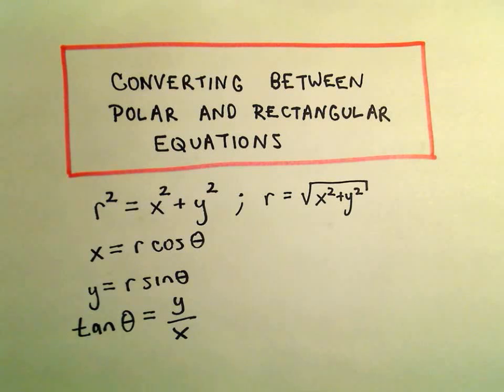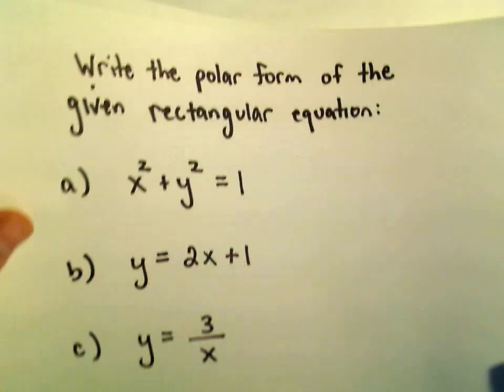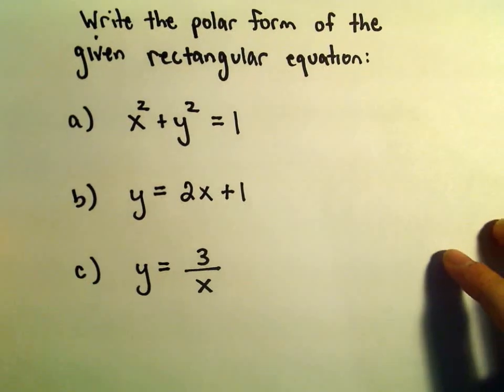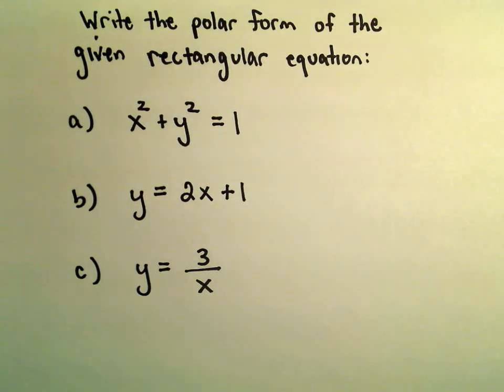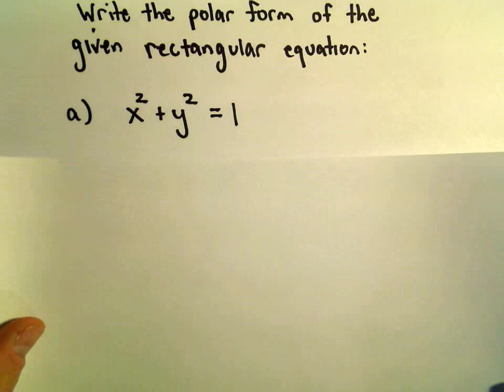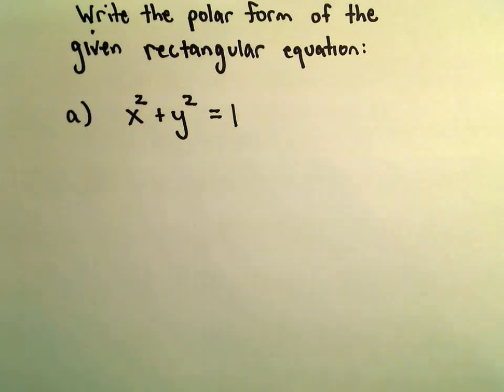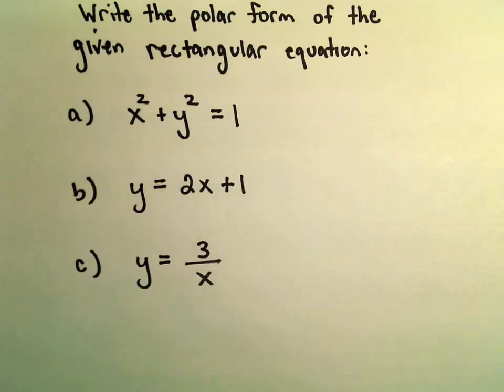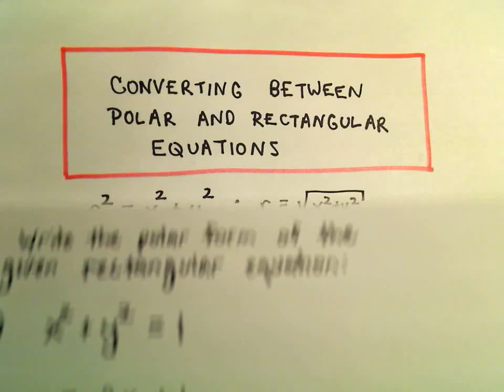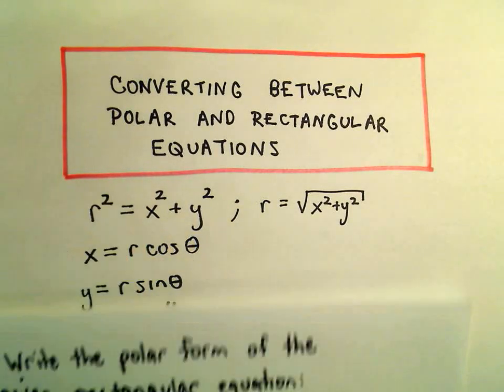Alright, in this video we're going to go the other way. Instead of going from polar to rectangular, we're going to go from rectangular to the polar form. So I think we can probably do all of these here in one video. So let's see, x squared plus y squared equals 1. Well, we saw that x squared plus y squared, that's simply the same thing as r squared.